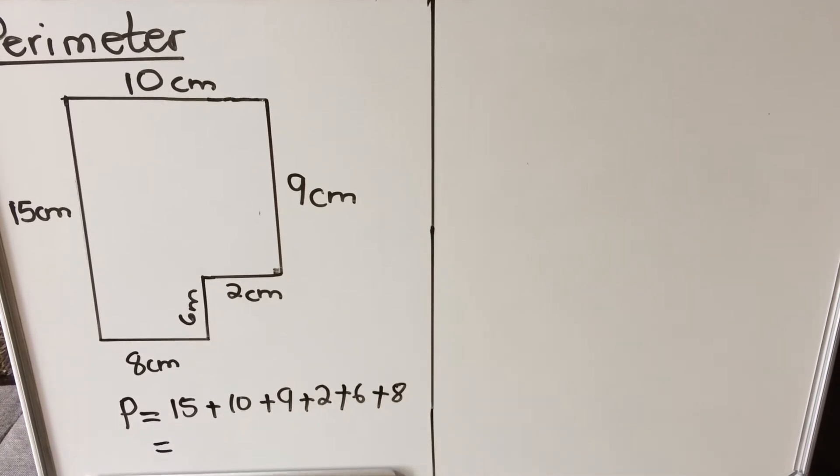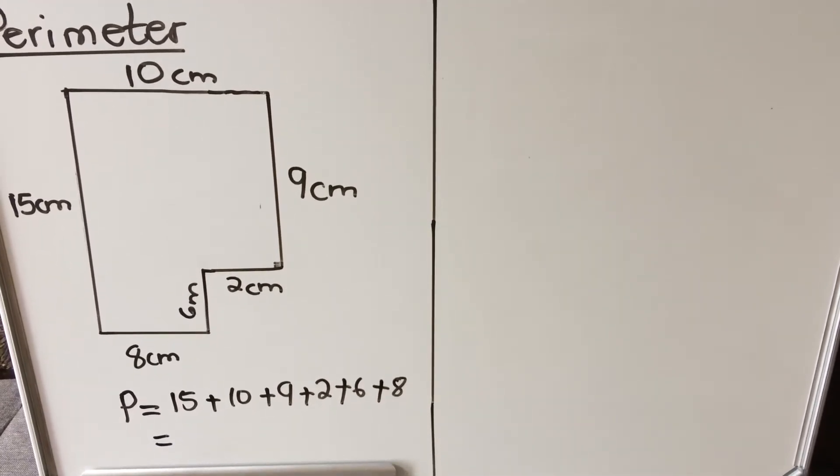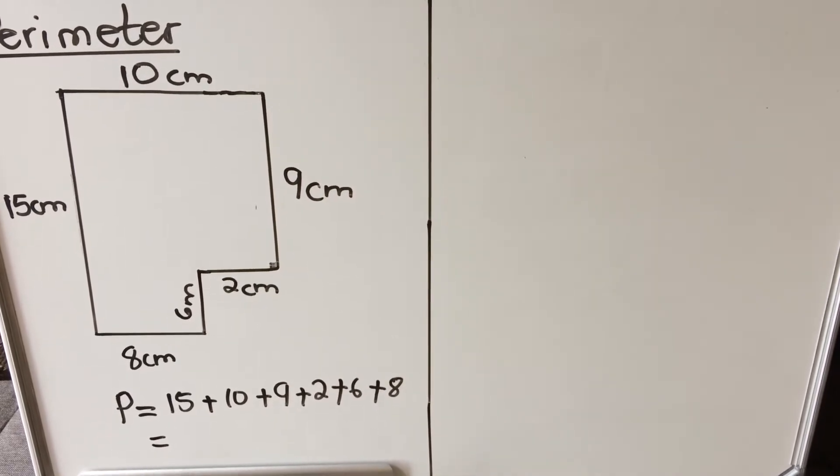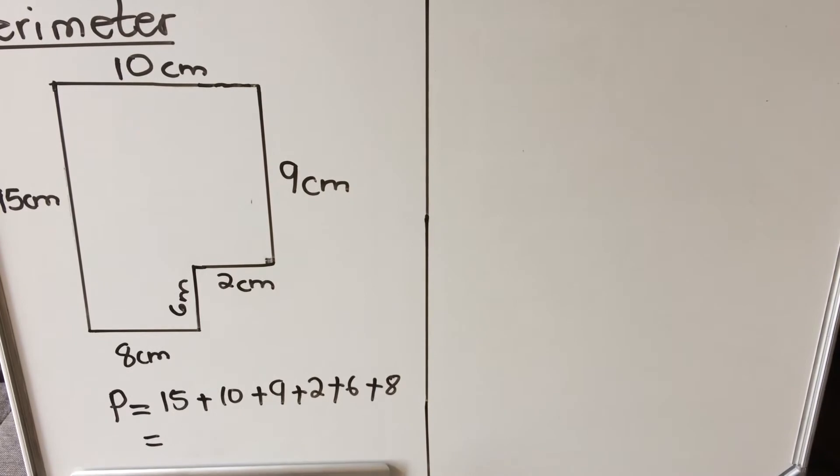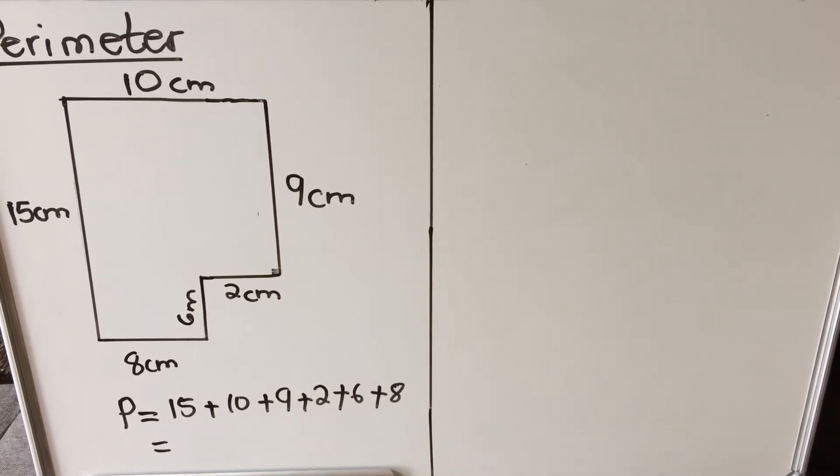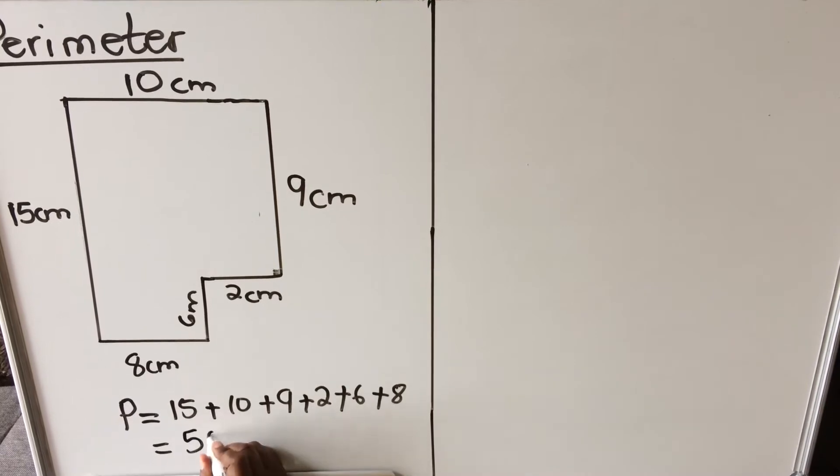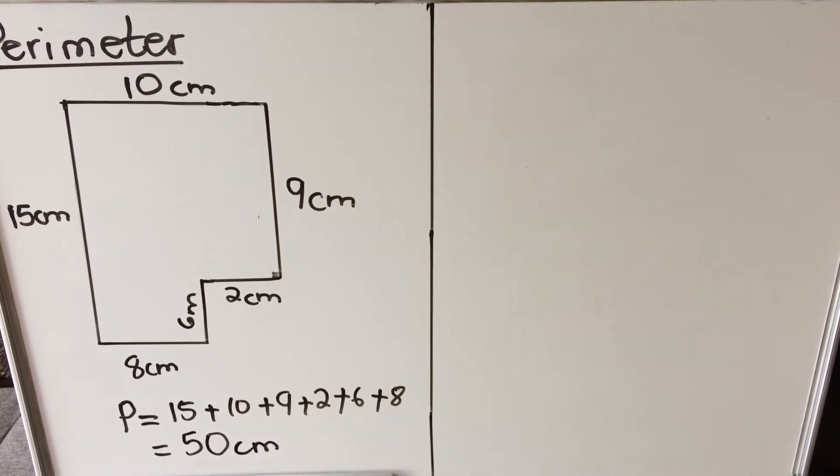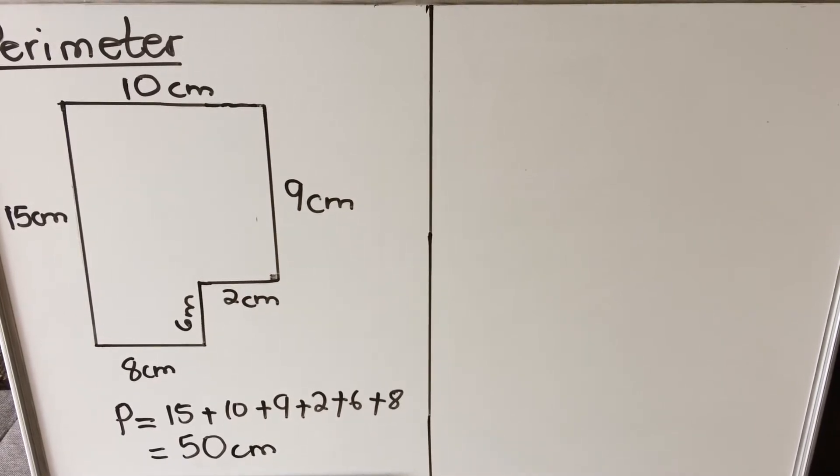Then we take our calculator and we add all of these values. 15 plus 10 plus 9 plus 2 plus 6 plus 8. So the perimeter around the object is 50 centimeters. This is how you calculate the perimeter of irregular shapes.